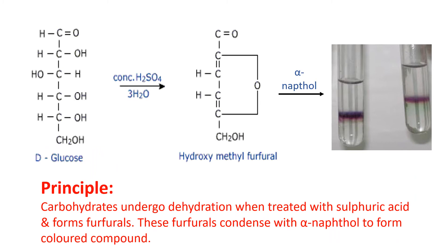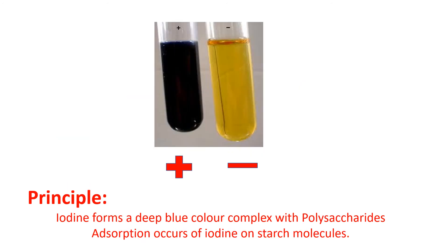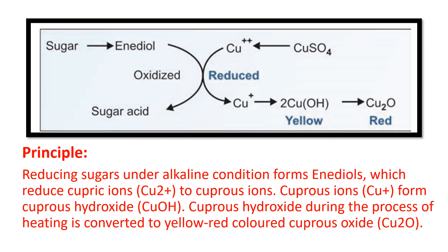As discussed in the earlier video, I will go quickly through the principles. For the Molisch test: glucose, in the presence of concentrated sulfuric acid, is dehydrated to form furfural, which condenses with alpha-naphthol to give the violet-purple color ring. For the iodine test, it will give a negative result for the given sample as it is a monosaccharide.